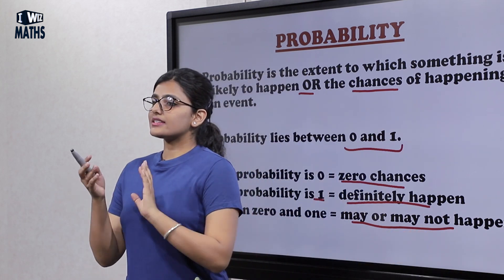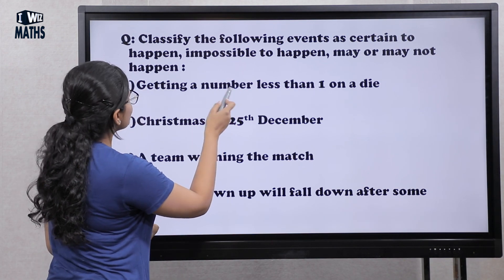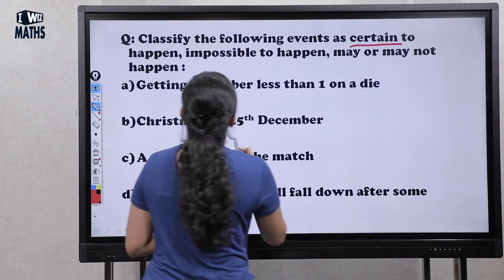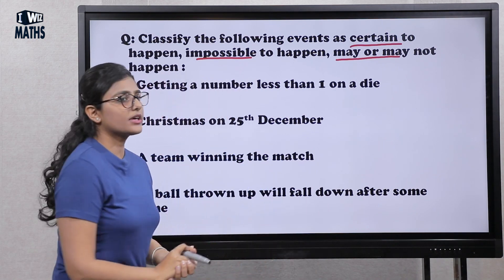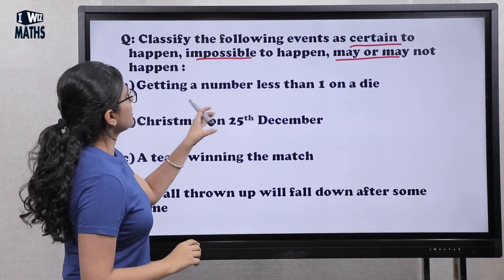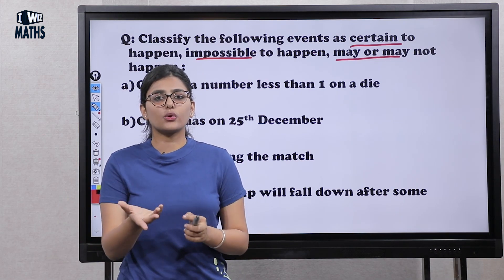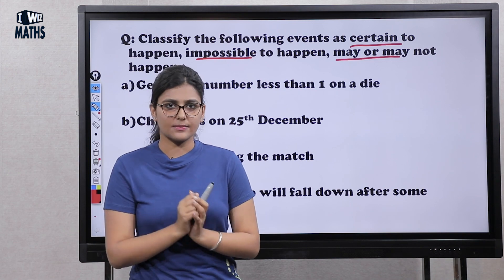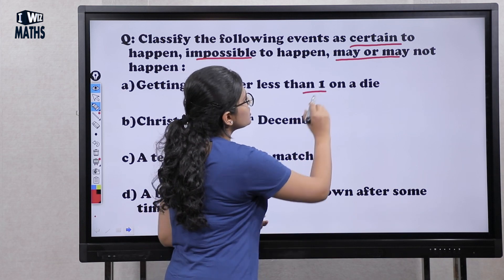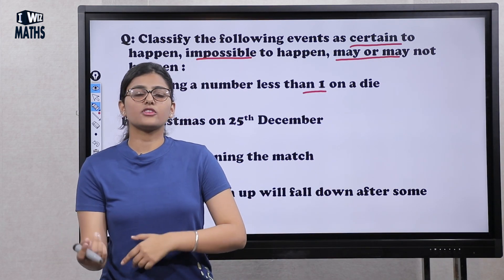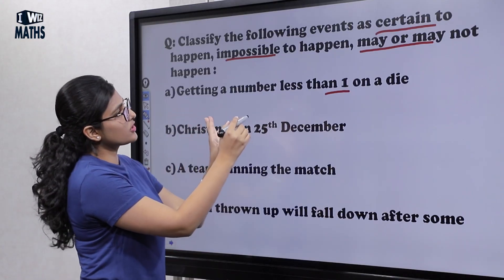Let's see some questions based on this. The question says: classify the following events as certain to happen, impossible to happen, or may or may not happen. The first is getting a number less than one on a die. A die, like in Ludo, has numbers from one to six. Since numbers start from one, getting a number less than one is not possible. So this is an impossible event.